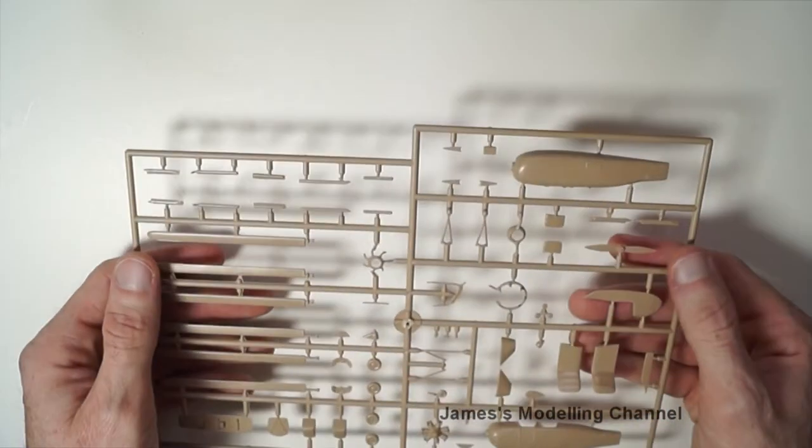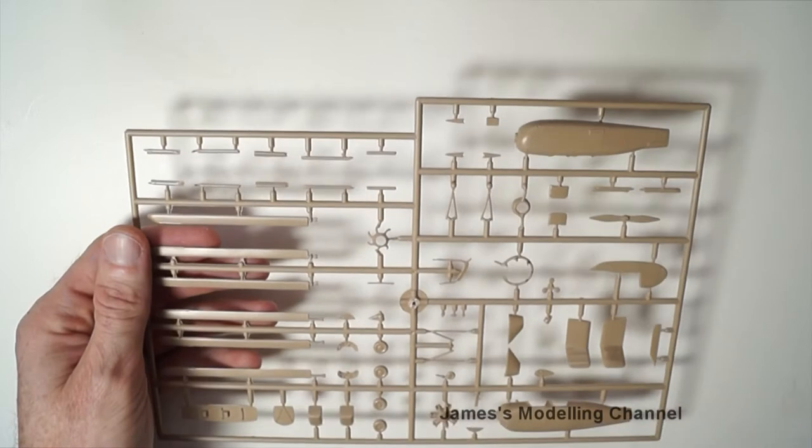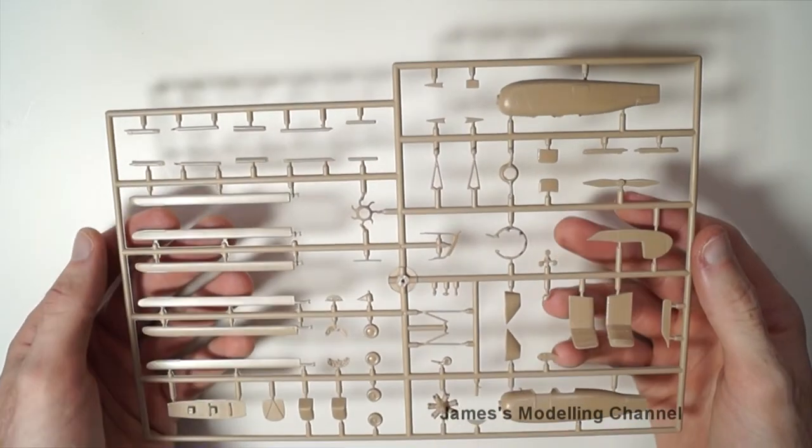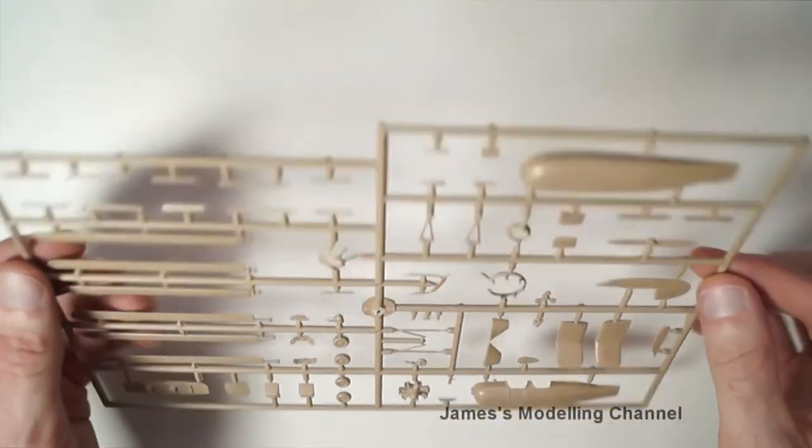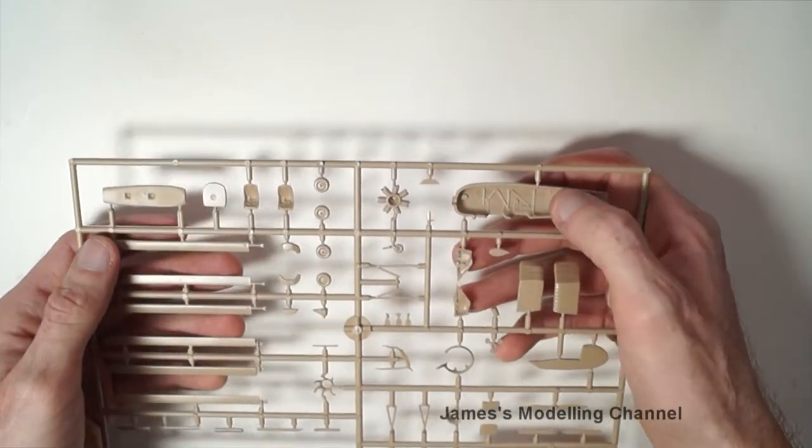Starting off with the sprue sheet. All the plastic is nicely molded, there's no flash. There is some nice cockpit side walling detail here.